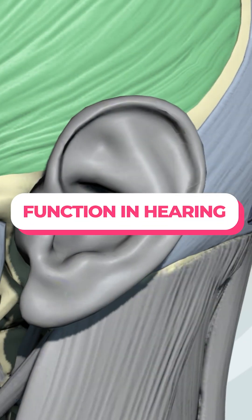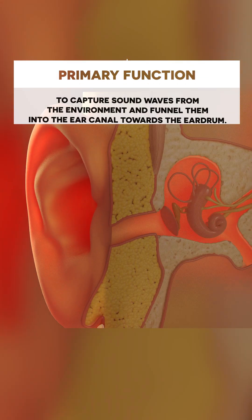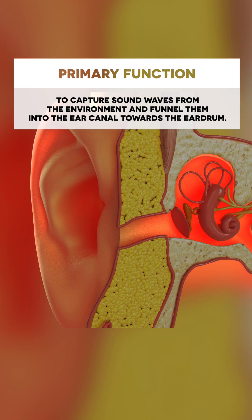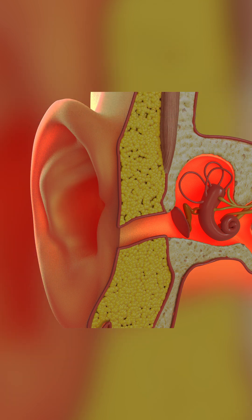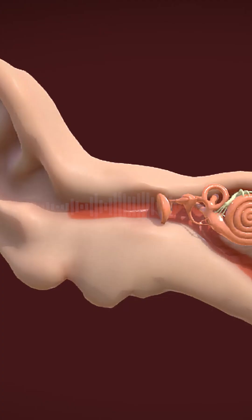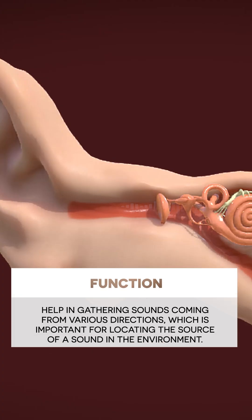Function in hearing: The primary function of the pinna is to capture sound waves from the environment and funnel them into the ear canal towards the eardrum. Its shape is designed to efficiently collect and direct sound. Different parts of the pinna help in gathering sounds coming from various directions, which is important for locating the source of a sound in the environment.